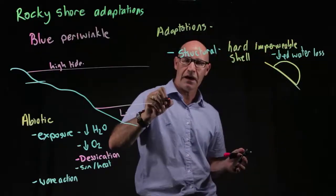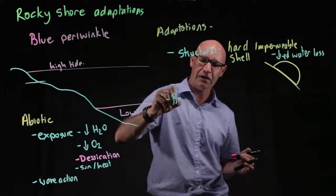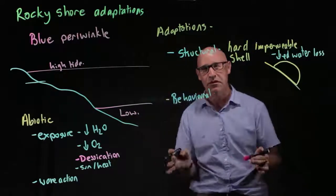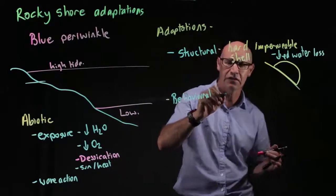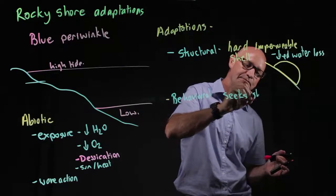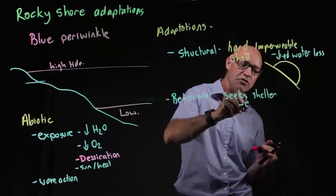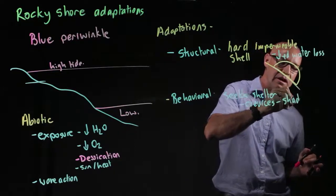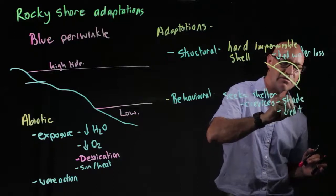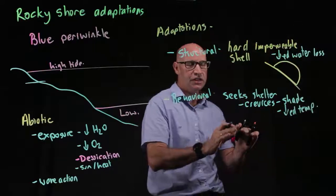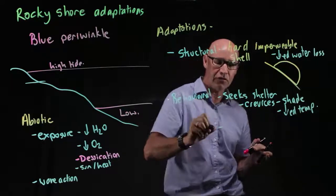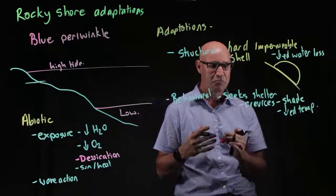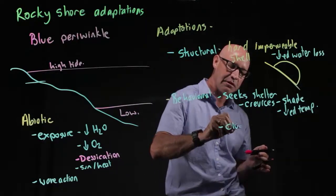The next thing we have is behavioral adaptations, which is how an organism behaves. A couple of things the blue periwinkle does: it seeks shelter in crevices between rocks. In those crevices there's often shade and decreased temperatures, so it's not as hot. They do that to avoid drying out.